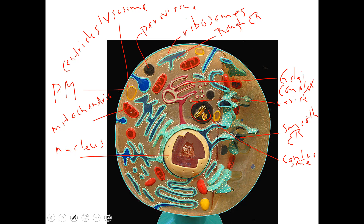Those are the parts you need to recognize in an animal cell. Another thing to note: the fluid inside the cell by itself is called cytosol. A lot of people come out of high school thinking it's called cytoplasm, but cytoplasm is technically everything inside the cell including all the organelles. So cytoplasm equals cytosol plus the organelles. Spend some time looking at different cell pictures online and make sure you'd recognize those organelles and know their functions.